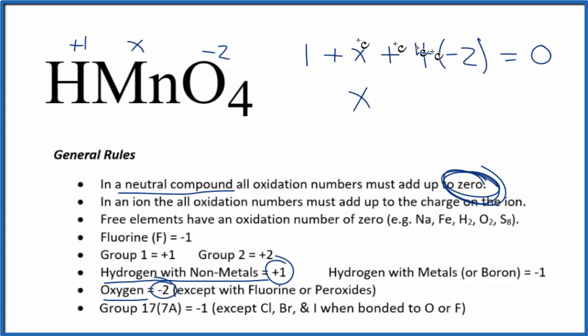So x, that's minus eight plus one, so minus seven equals zero. Add seven to both sides, x equals positive seven. So the oxidation number on the manganese in this permanganic acid is going to be a positive seven.